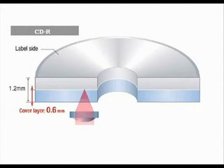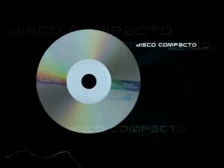A CD disk is made of plastic covered by polycarbonate, then aluminum is sprayed on it, and it has an acrylic layer to protect the surface of the CD.